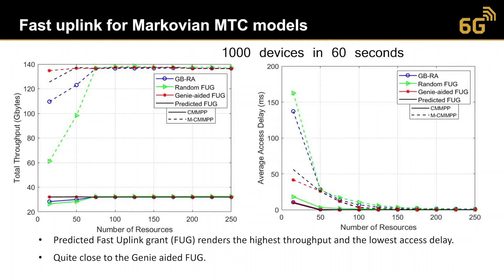The results are illustrated in this slide where the proposed approach — which applies LSTMs for predicting the traffic pattern of the MTC devices and providing proactive resource allocation — renders higher throughput and lower access delay when compared to other grant-based random access and random fast-uplink grant methods, as shown in this figure.